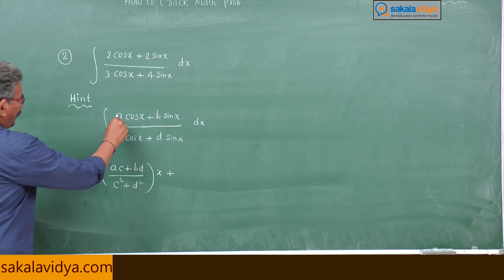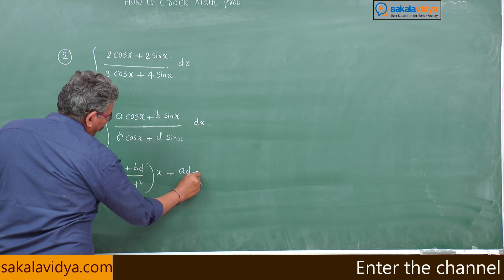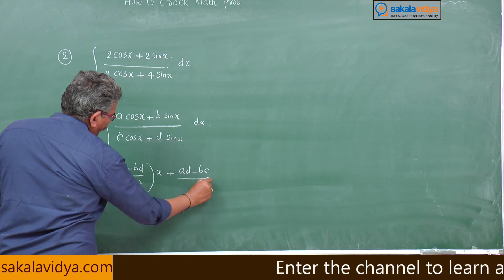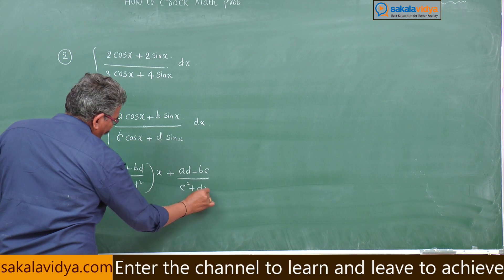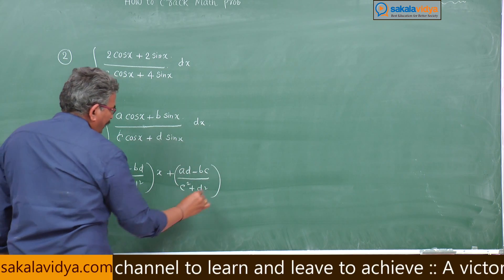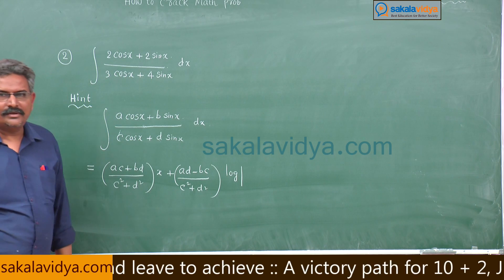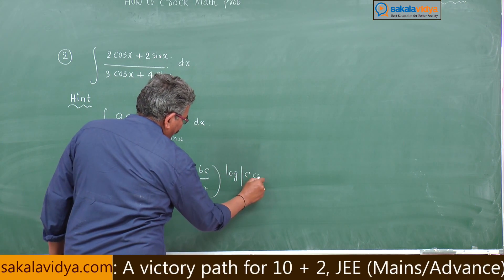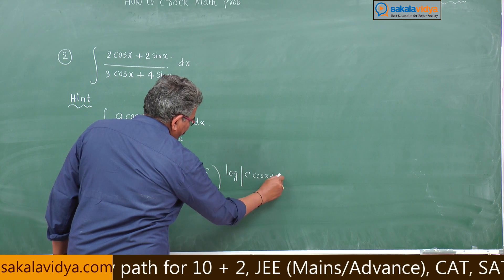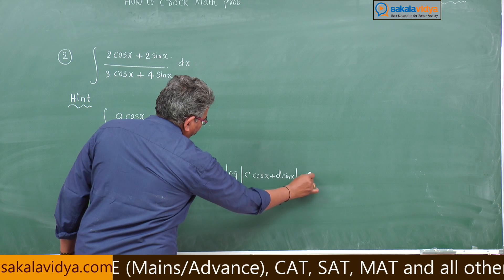A, B, C, D determinant - AD minus BC upon same C square plus D square, log of mod, here numerator by denominator, denominator is C cosx + D sinx plus constant of integration.